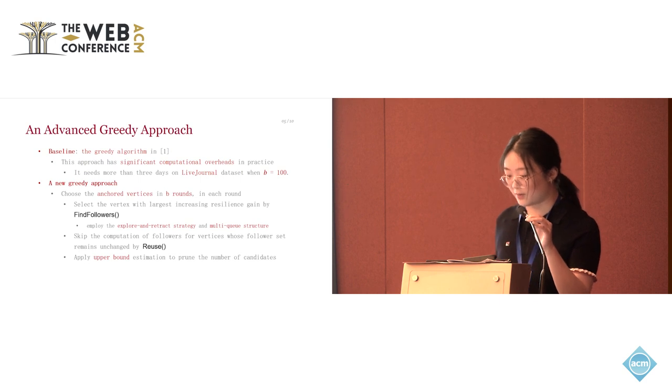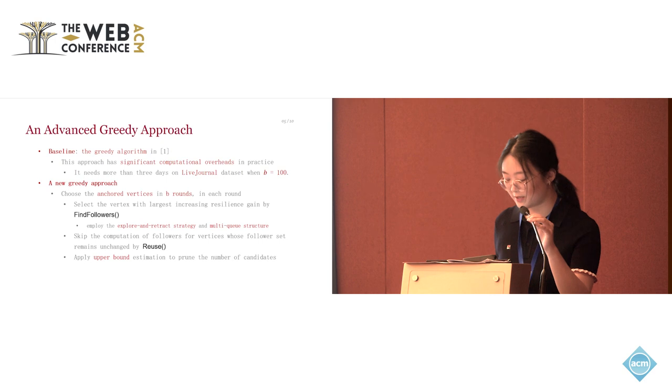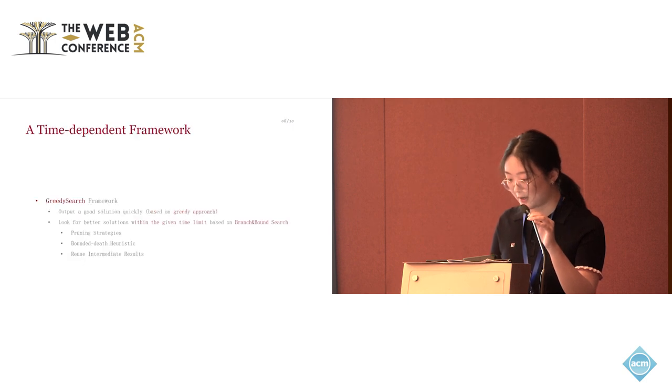We propose a new greedy approach called ADV greedy, and it will choose the anchored vertices in B rounds. In each round, it selects the vertex with the largest increasing resilience gain by a function called findFollowers. The function employs the explore and retract strategy and multi-grid structure. It skips the computation of followers for vertices whose follower set remains unchanged by a function called reuse. And it also applies upper boundary estimation to prune the number of candidates.